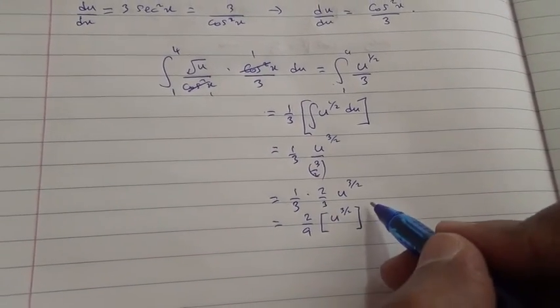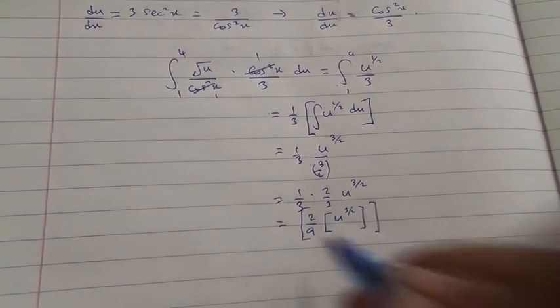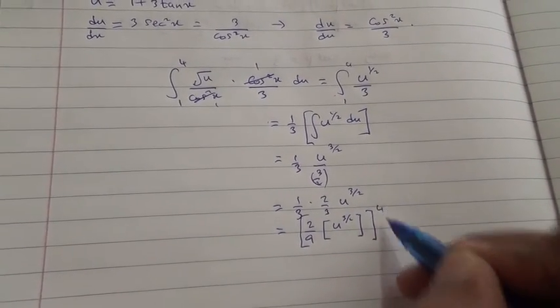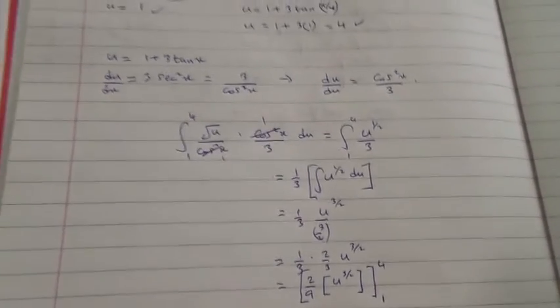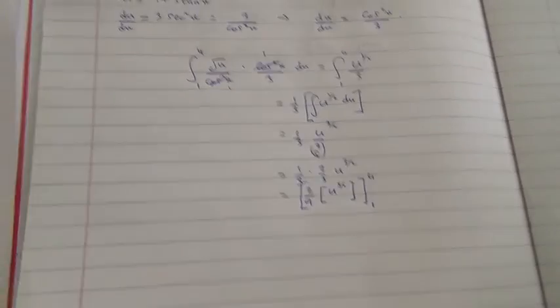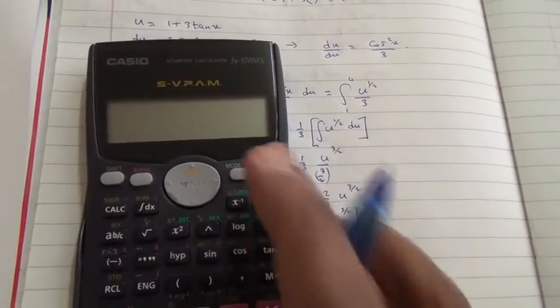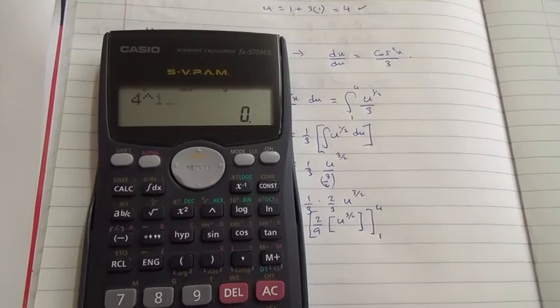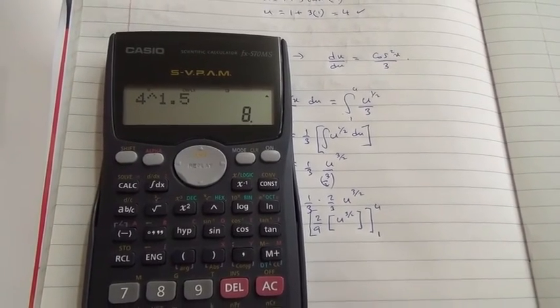And then, now, you're going to have to put your limits. What are your limits? The limits are 4 and 1. So, if you do put 4 and 1 here, what is 4 to the power of 3 over 2? So, let's just do it in your calculator. So, 4 to the power of 3 over 2 is 1.5. It's going to give us 8.